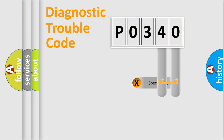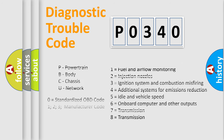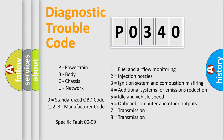Only the last two characters define the specific fault of the group. Let's not forget that such a division is valid only if the second character code is expressed by the number zero.